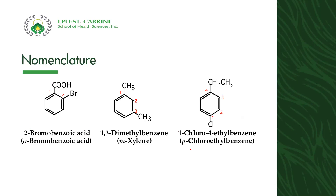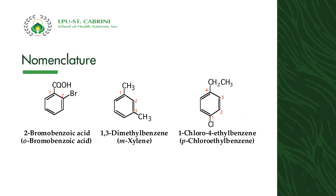When two substituents occur on benzene, we use the locators ortho, meta, and para. For example, this is ortho-bromobenzoic acid. Since COOH is our priority functional group, this is our benzoic acid parent. On carbon number two we have bromo, so we can name it 2-bromobenzoic acid — or using the locator, ortho-bromobenzoic acid. When we say ortho, the substituents are located on carbon one and carbon two.